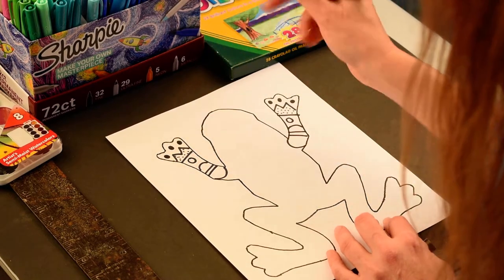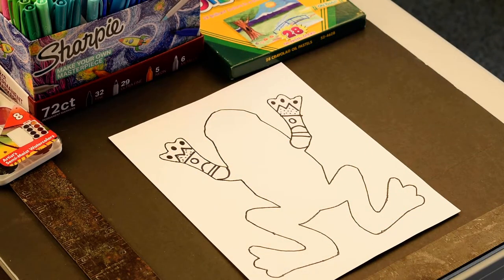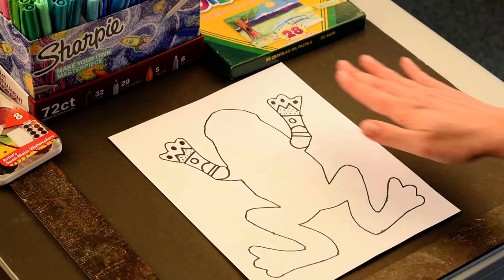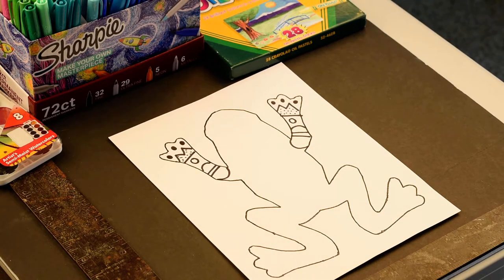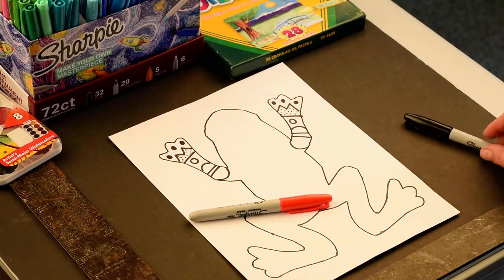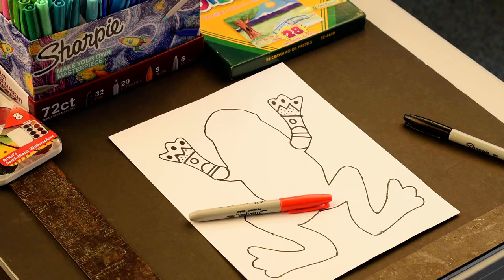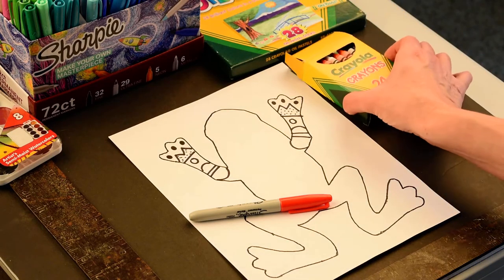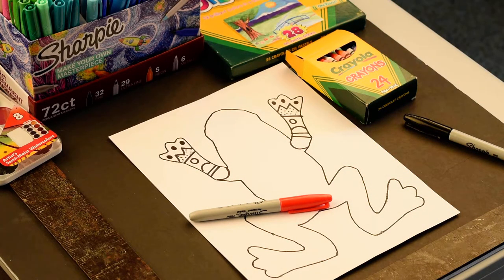So my suggestion is you first, you build your pattern using the black Sharpie, and then you can go ahead and you can fill in if you want to do it with color. Now you can use a variety of mediums here. So you could use Sharpie if you wanted to color it in, you could use crayon if you wanted to color it in, or you can use oil pastels, or you can do watercolor. It's really up to you.